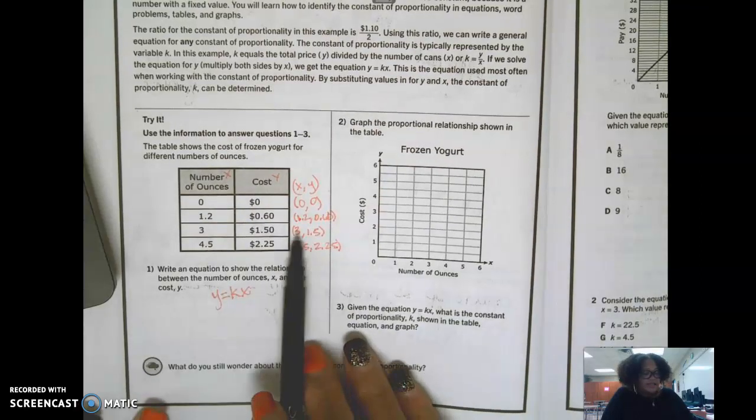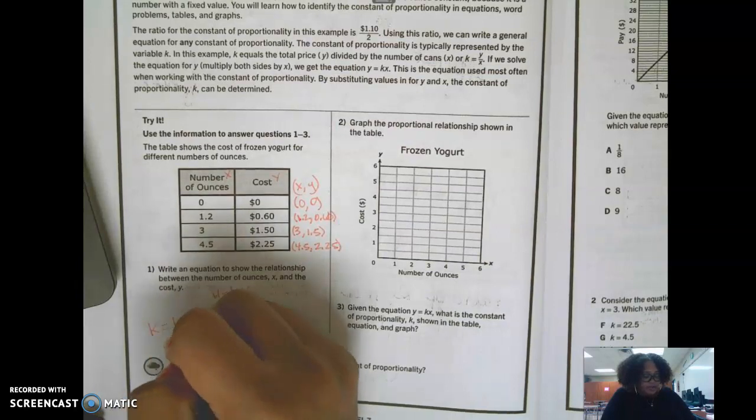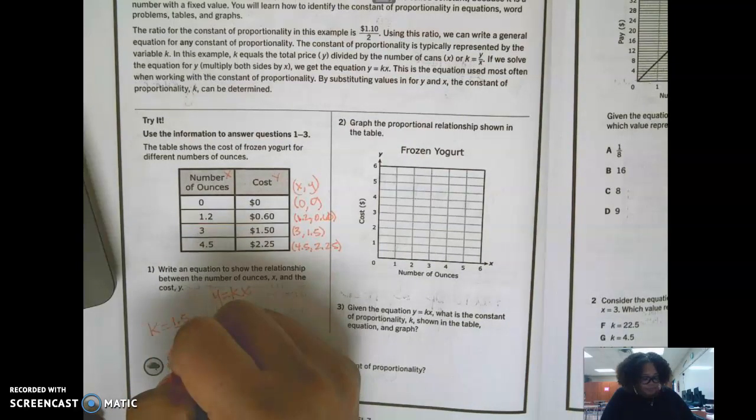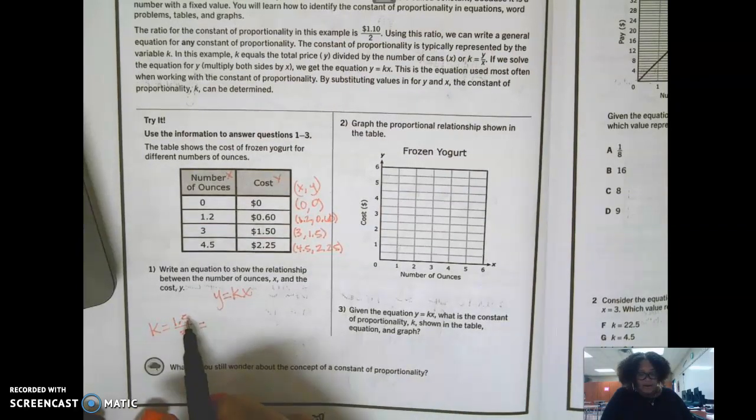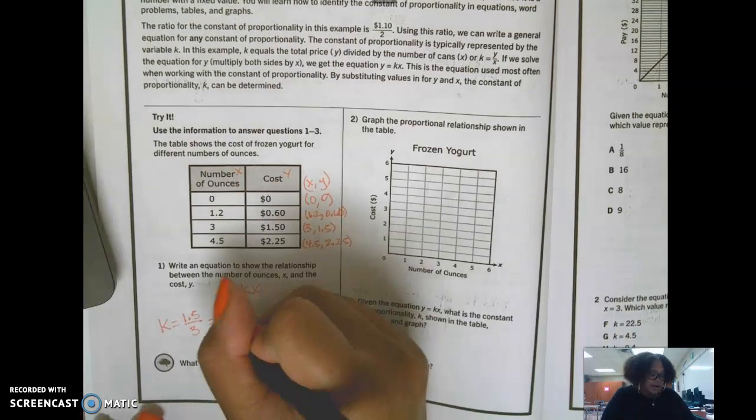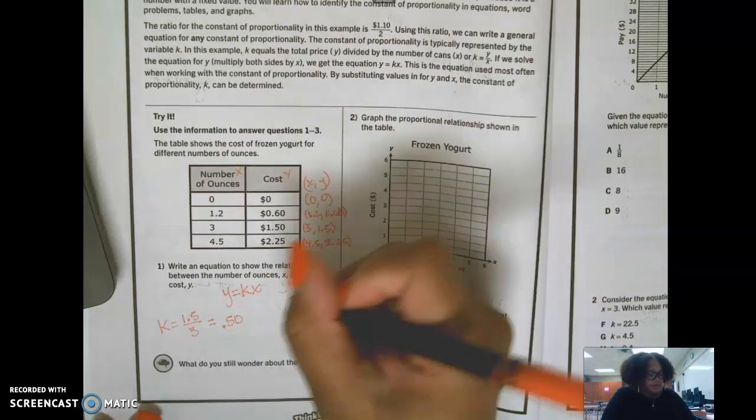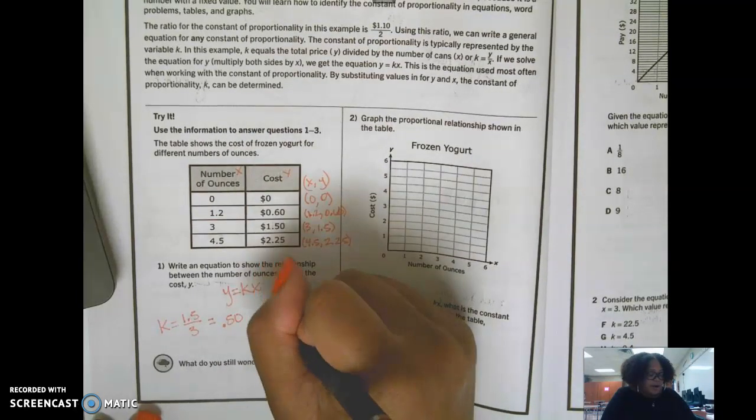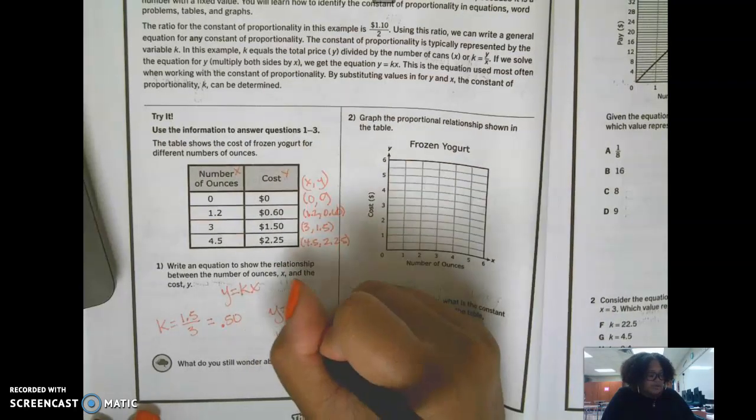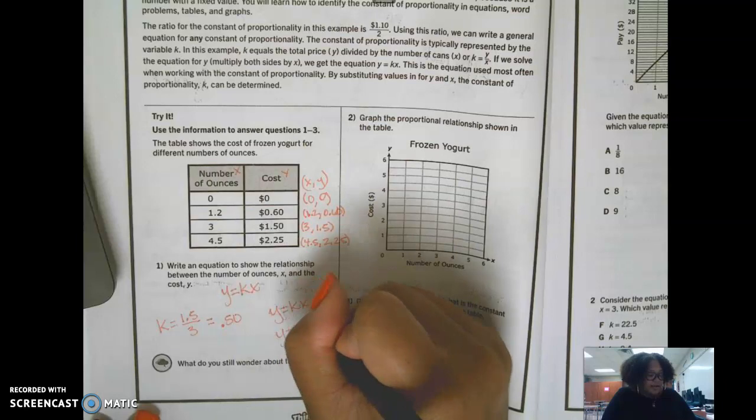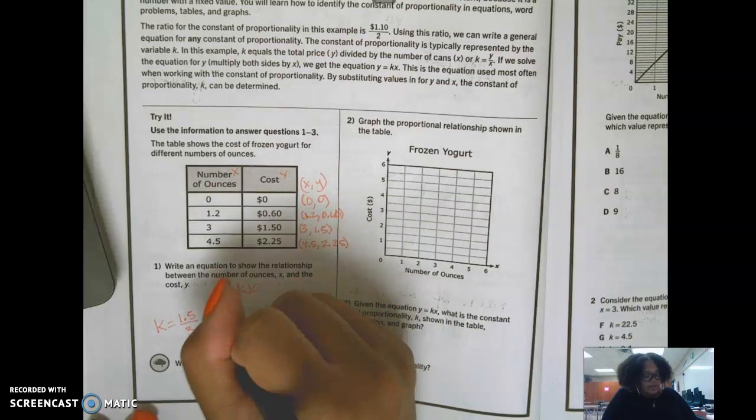So I'm going to take the easy one to divide and I'm going to do 150 divided by 3. So k equals 1.5 divided by 3 and 3 goes into 15 five times. So this is $1.50. So I'm going to have 50 cents, 3 sets of 50 cents is $1.50. So writing my equation y equals kx, I'm going to write y equals 0.5x, and there is my equation. k is 0.5.